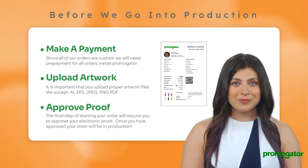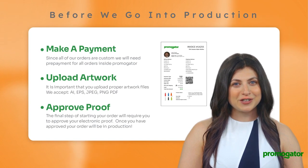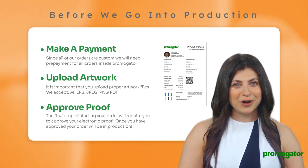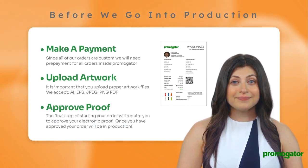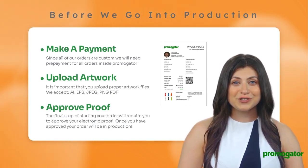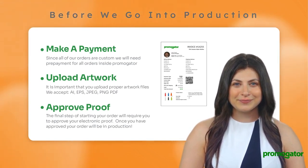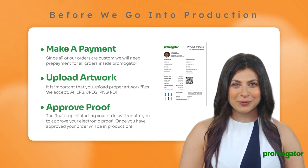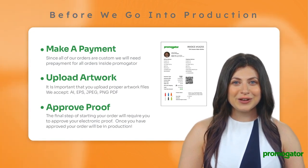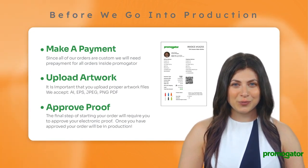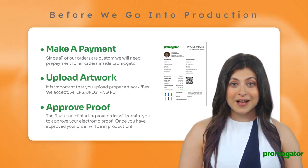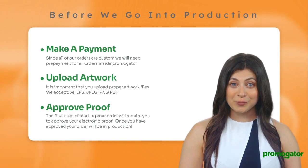One thing to consider before we go into production: three requirements must be met. The requirements to move an order into production are making a payment for your order, uploading and sending us artwork, and lastly, approving your electronic proof.